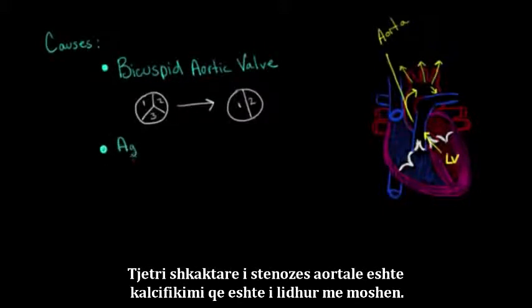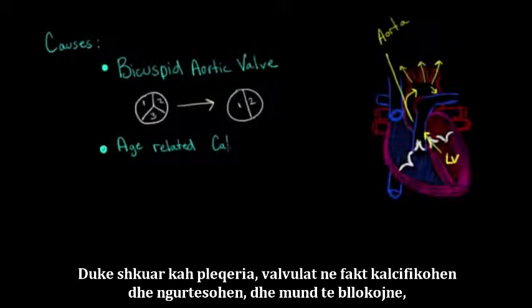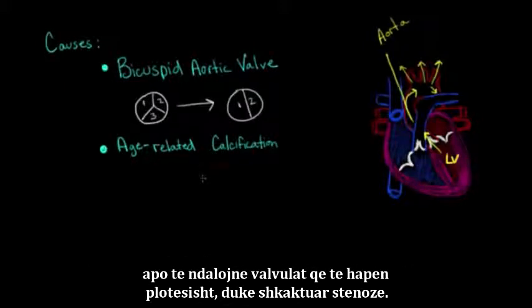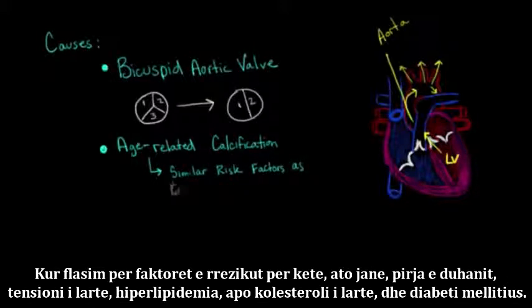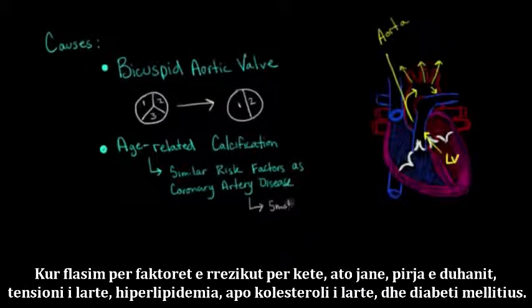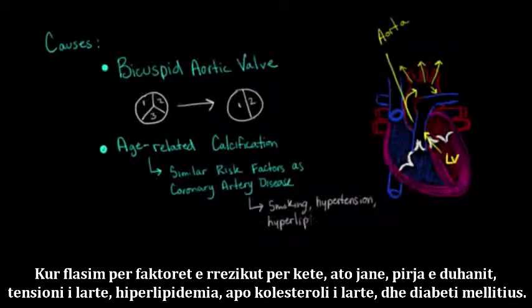Another cause of aortic stenosis is age-related calcification. As you get older, the valve actually calcifies and gets hardened, and can obstruct or stop the valves from opening all the way, causing stenosis. The risk factors for having calcification of the aortic valve are very similar to the process of coronary artery disease — things such as smoking, high blood pressure or hypertension, hyperlipidemia or high cholesterol, and diabetes mellitus.